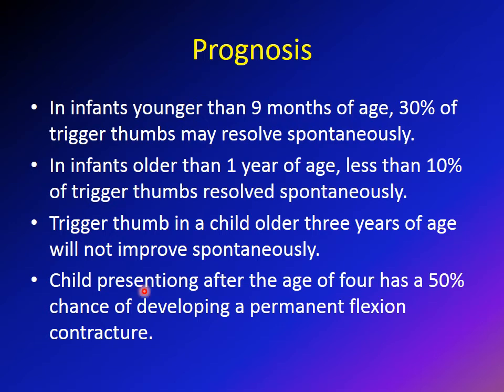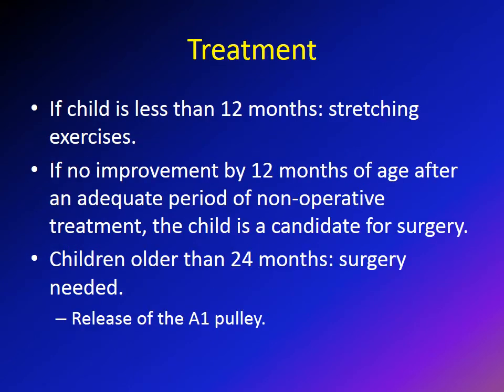Children presenting after the age of four years old have a 50% chance of developing a permanent flexion contracture even with surgery. So if a family presents with a child who is about five years old, when we discuss prognosis with them we have to tell them that even with surgical release, the child may develop a permanent contracture.